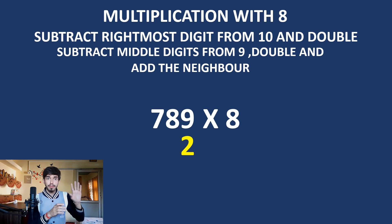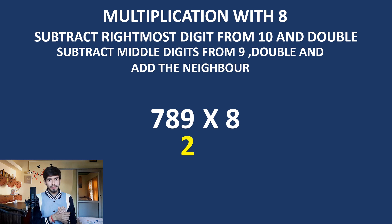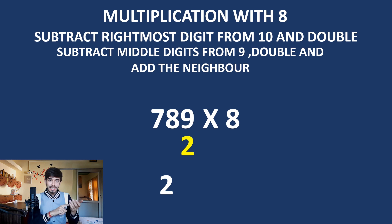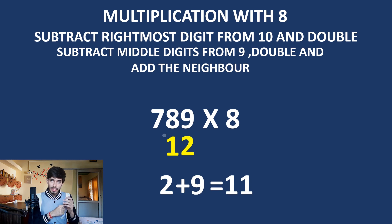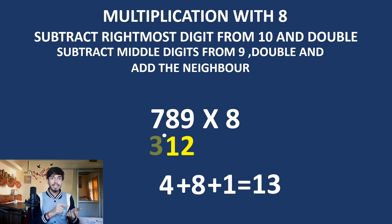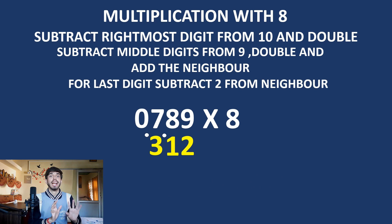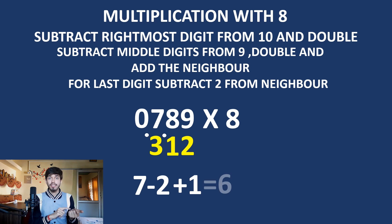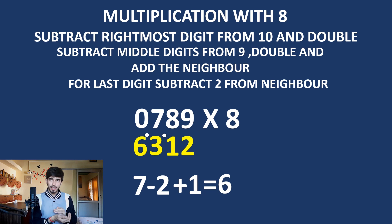For the middle digits, subtract from 9 — similar to before — but this time double and add the neighbor. We have 8, so 9 minus 8 is 1; double of 1 is 2; add the neighbor 9: 2 plus 9 is 11, so write 1 with a carry dot. We have 7, so 9 minus 7 is 2; double is 4; 8 plus 4 is 12, plus 1 carry is 13, so write 3 with a dot. For the last step when you reach 0, subtract 2 from the neighbor: 7 minus 2 is 5, but with 1 carry, that's 6. This is how you multiply with 8 using the Trachtenberg system.